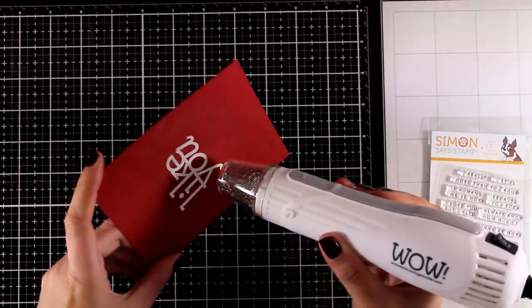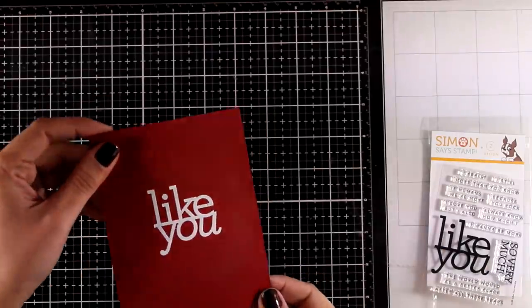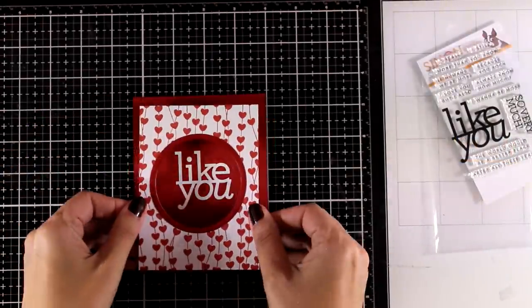So I stamped that with my embossing ink and then applied my white embossing powder, heat set it and I believe there is a die for that as well.